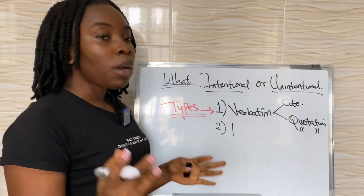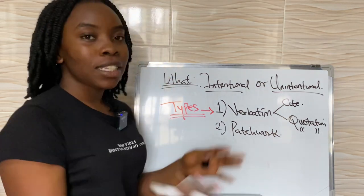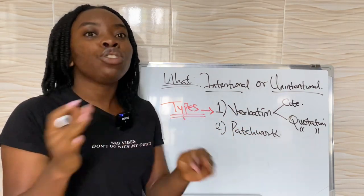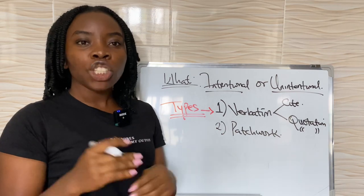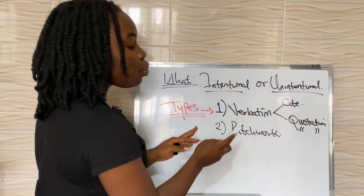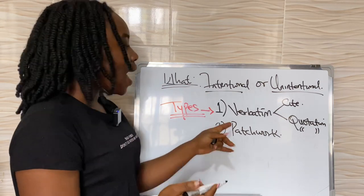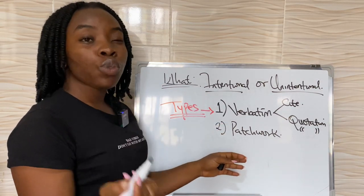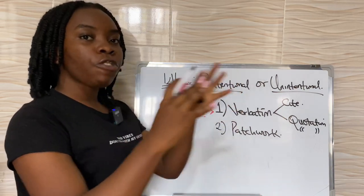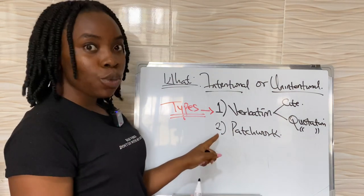The second type is patchwork plagiarism. It means you copy someone's idea from here, someone's idea from there, and then you put them together in a written text without citing anybody or giving credit to anybody. A lot of people do patchwork thinking they won't be caught, but the plagiarism software used in most UK schools — known as Turnitin — is going to pick up patchwork plagiarism where you copy different sources, put them together, and don't cite any of the authors.